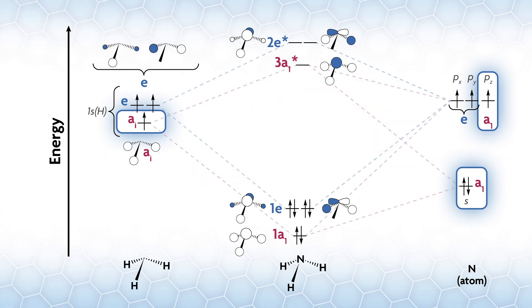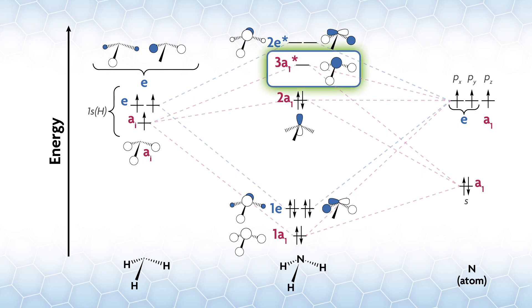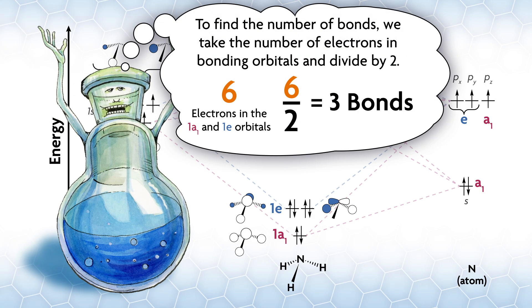Our full MO diagram will look something like this. We have a total of eight electrons from both sides, so we'll fill those in to get the highest occupied molecular orbital is 2a1, which is approximately non-bonding on the nitrogen. The lowest unoccupied molecular orbital is 3a1 star, a sigma antibonding orbital. To find the number of bonds, we take the number of electrons in bonding orbitals and divide by two. There are six electrons in the 1a1 and 1e orbitals, so six divided by two equals three bonds total between the nitrogen and the hydrogens.